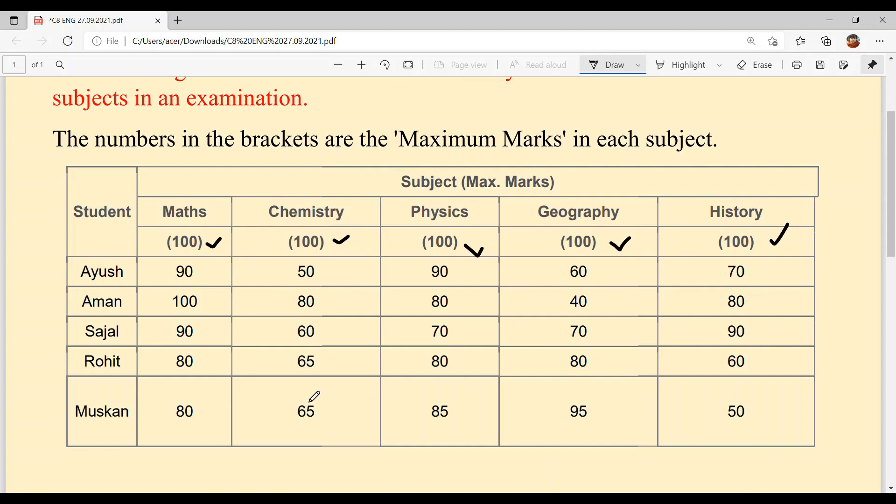Ayush got 90 out of 100 in Maths, 50 out of 100 in Chemistry, 90 out of 100 in Physics, 60 out of 100 in Geography, and 70 out of 100 in History. Aman got 100 out of 100 in Maths, 80 out of 100 in Chemistry, 80 out of 100 in Physics, 40 out of 100 in Geography, and 80 out of 100 in History.